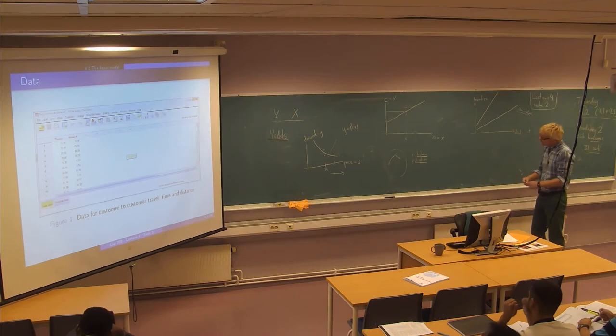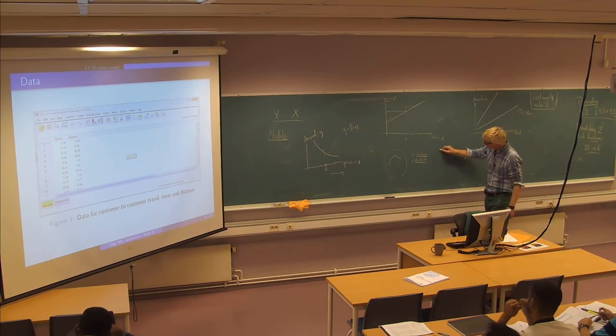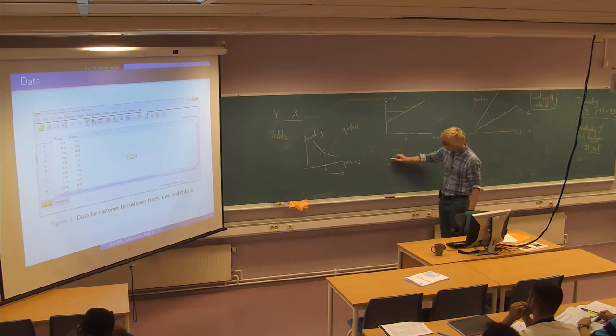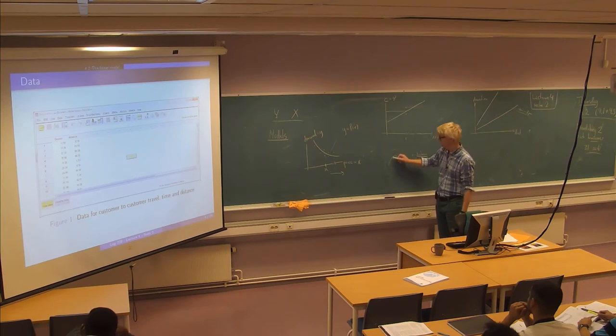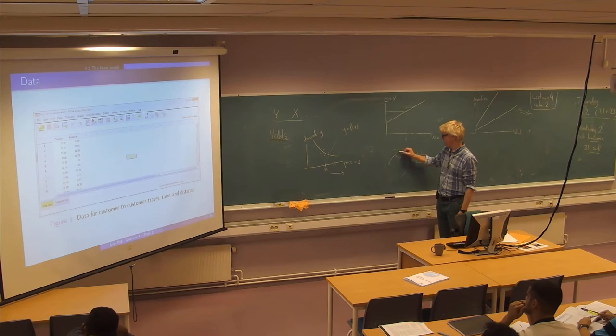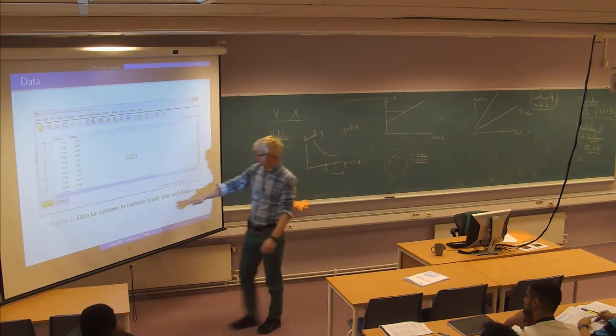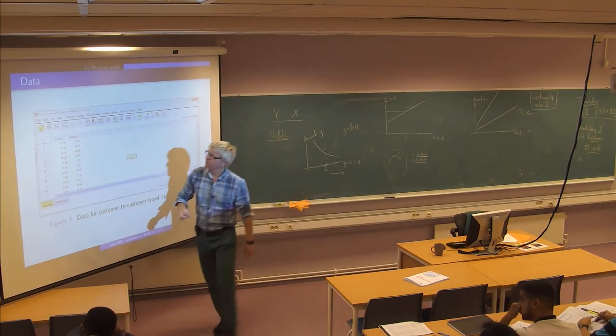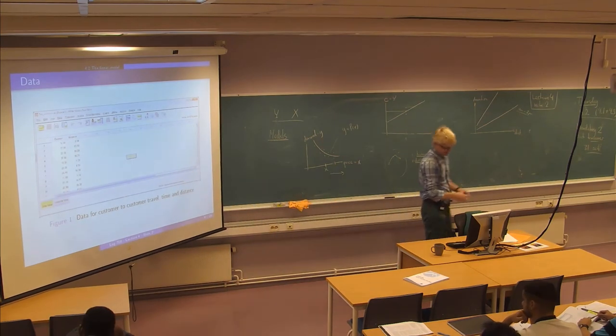So this data then, supposing they have observed for some days or some periods. Here's one trip of seven kilometers and it took so and so long. Here's another for five kilometers and it took so and so long. And then you have a data set like this. And I think there are 200 observations here just for this set.